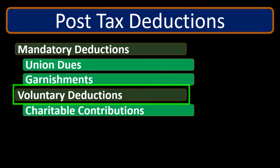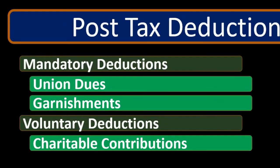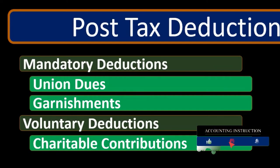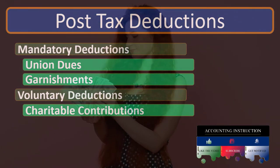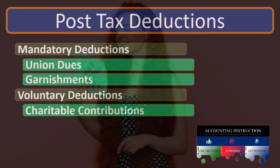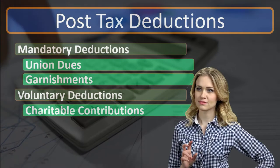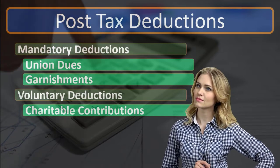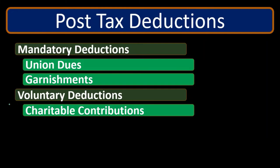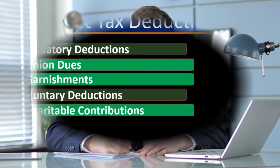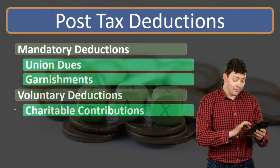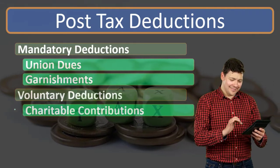Then we have voluntary deductions — this could be anything else we set up. For example, charitable deductions: if an employee wants a percentage of each paycheck to go to a charity automatically, that would be a benefit. It's not going to reduce taxes on the payroll register, although charitable deductions may be deductible on federal and state tax returns. When an employee fills out their W-4, if they have a lot of charitable deductions, they may adjust withholdings for federal income tax — but in terms of our net check calculation, it has no effect on the federal income tax calculation.